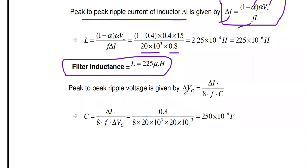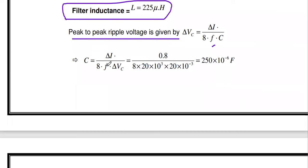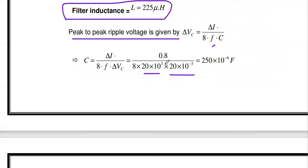Similarly, using the ripple voltage formula: ΔVc = ΔI / (8 × F × C). Rearranging for C: C = ΔI / (8 × F × ΔVc) = 0.8 / (8 × 20 × 10³ × 20 × 10⁻³). The answer is 250 microfarad. The inductance value of 225 μH and capacitance value of 250 μF are both calculated.